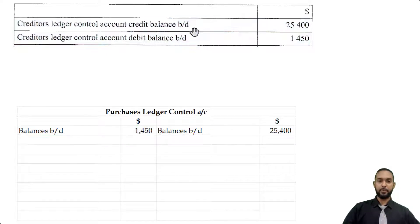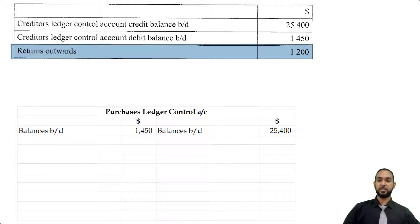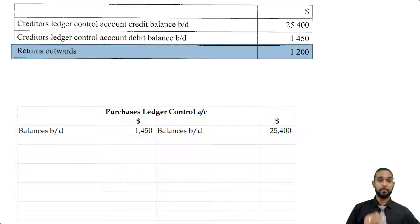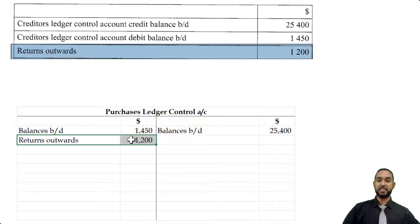We have returns outwards. When we return stock to our creditors, we no longer have to pay for those items, which means the amount we owe to our creditors is coming down. To record a decrease in a liability, you have to debit the liability account. So you're seeing returns outwards on the debit side of the creditors control account.